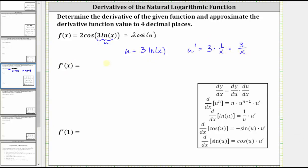And now we can find the derivative function. f prime of x is equal to the derivative of two cosine u with respect to x, which is equal to two times negative sine u times u prime.